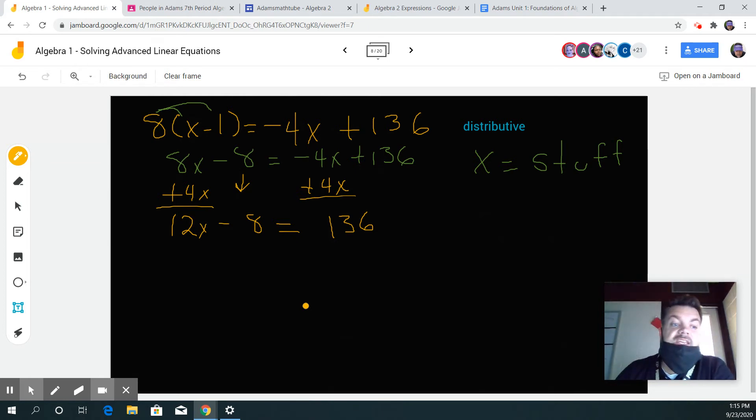I'm going to add 8. I need to move stuff away from the x. I can move the 12 or I can move the 8, but the 12 is always last. The coefficient of the variable is always the last thing we move. So I'm going to move the 8 first by doing the opposite operation. Instead of subtracting 8, the opposite of that is add 8. Whatever I do on one side I do to the other.